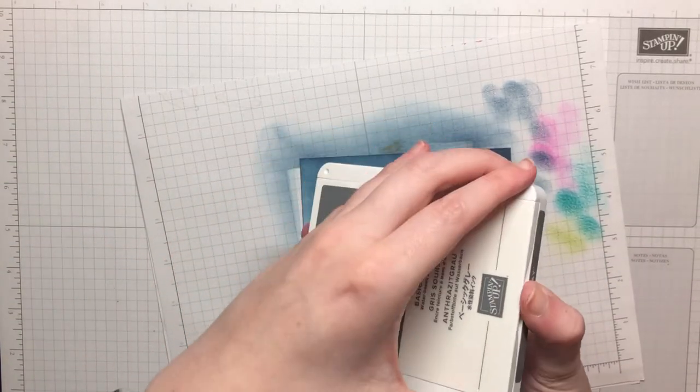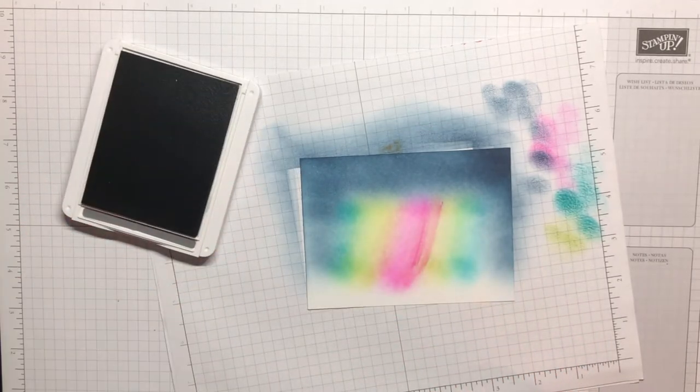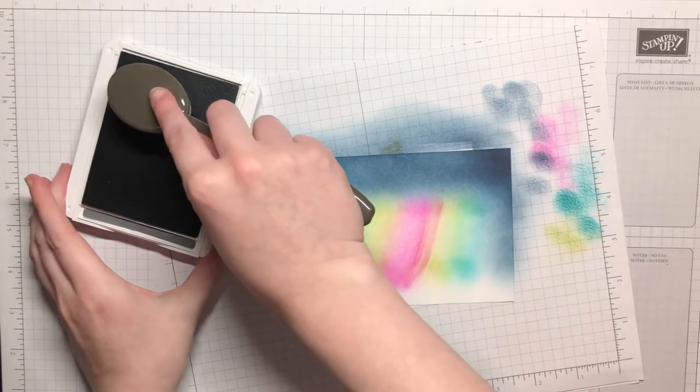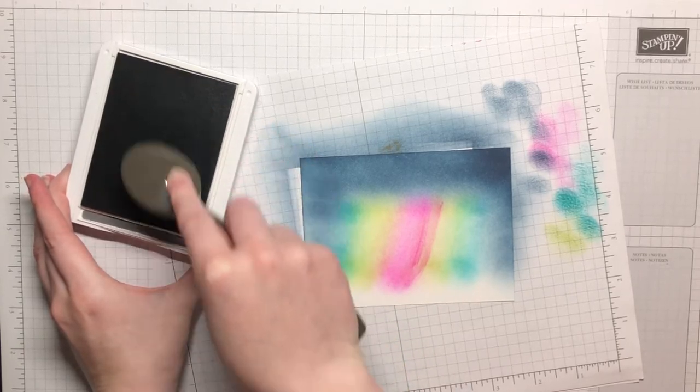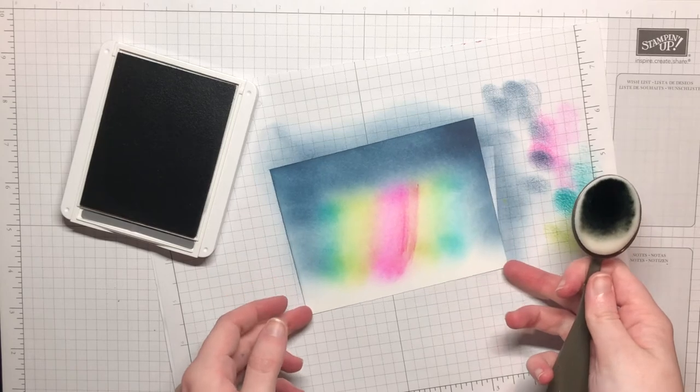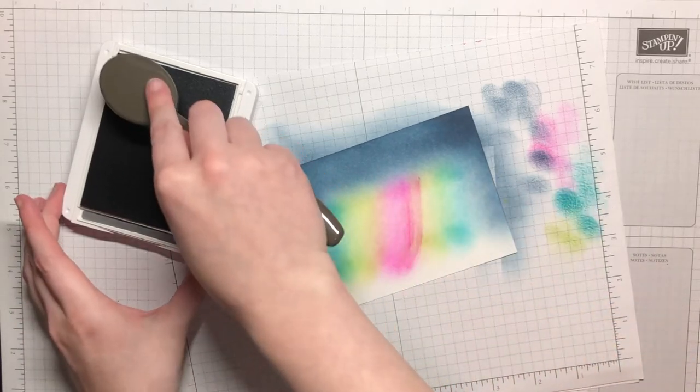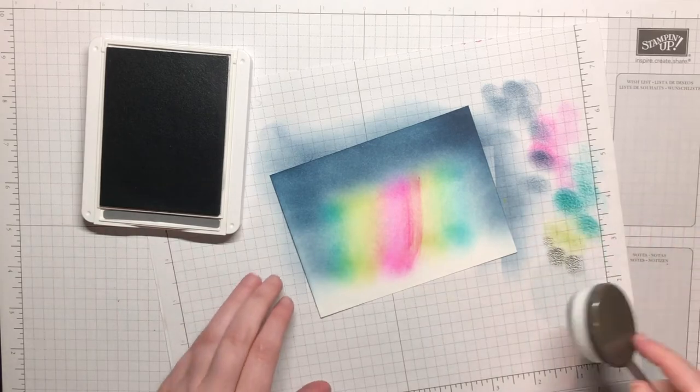So that's done so I'm gonna go ahead and remove my Misty Moonlight. And then I've got my basic gray here and I'm gonna go ahead and open that up. And bring in my gray blending brush and pick up some color again here. And this time I'm gonna go ahead and sponge this gray on the bottom. I'm gonna put a mountain there and so I just kind of want that part to appear darker.